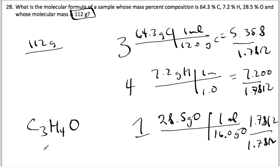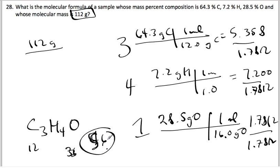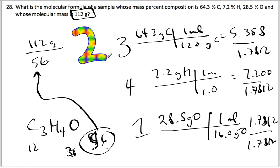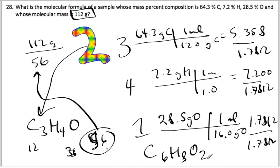The empirical formula is C₃H₄O. The molar mass of this empirical formula is 56. So I go 112 divided by 56 — the magic number is 2. Multiplying: C3×2 = C6, H4×2 = H8, O1×2 = O2. The molecular formula is C₆H₈O₂. Boom shakalaka!